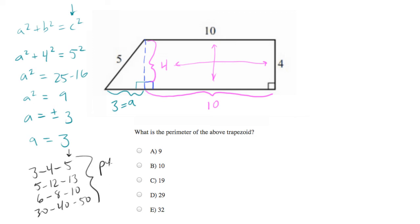Now let's go ahead and add up the perimeter for our trapezoid: 5, 10, 4, 10, 3.